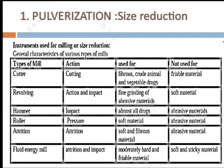Coming to the first step, pulverization. Different mills can be used for size reduction to get uniformly sized excipients as well as active pharmaceutical ingredients. These are some mills used for size reduction.